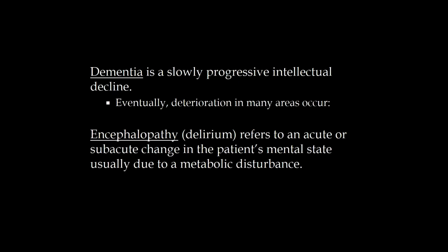Two conditions that affect mental status: one is dementia — a slowly progressive intellectual decline, now also called major neurocognitive disorder, but neurologists still primarily use the term dementia. The whole brain is affected: certainly memory, but lots of other areas too, and we get a slow progressive deterioration. Contrast that with encephalopathy — also called delirium — which comes on rather abruptly, unlike dementia, and is usually due to some metabolic disturbance.